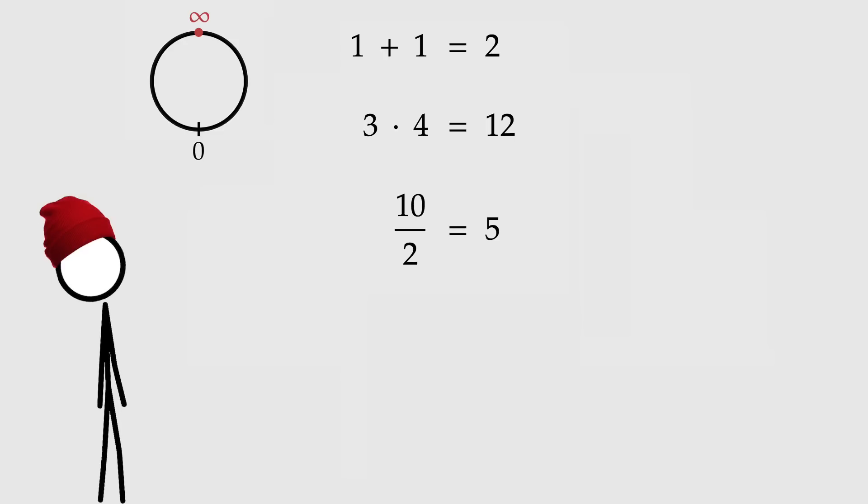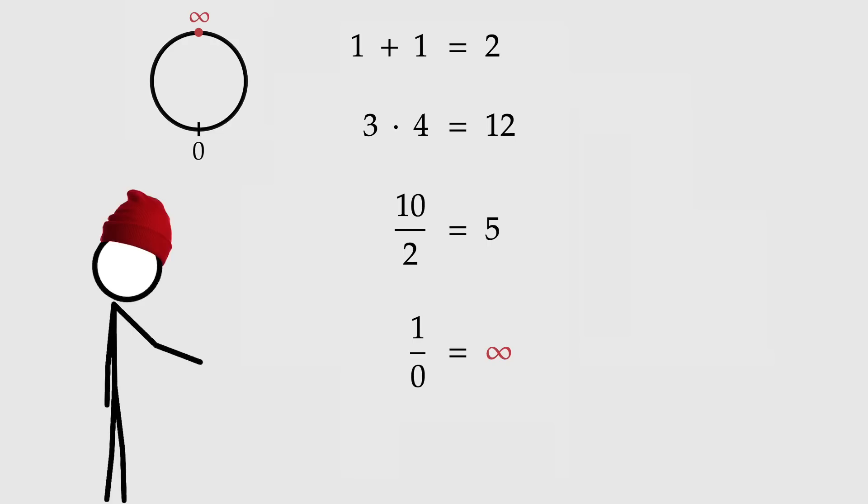Told you it was easy. So how does this work mathematically? Well, when it comes to standard arithmetic, nothing changes. You know, one plus one equals two, three times four equals 12, 10 divided by two equals five, etc. All of that stays the same. But using this new number that we've constructed, infinity, now we can also say one over zero equals infinity. And surprisingly, it works.